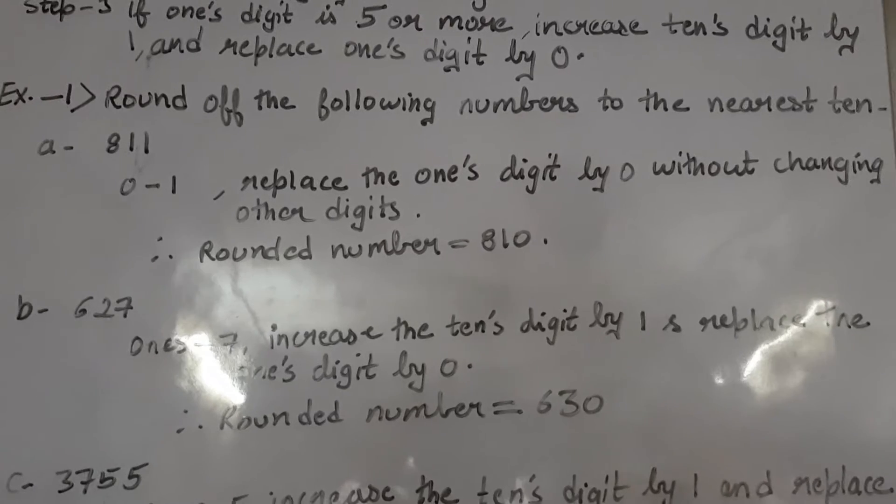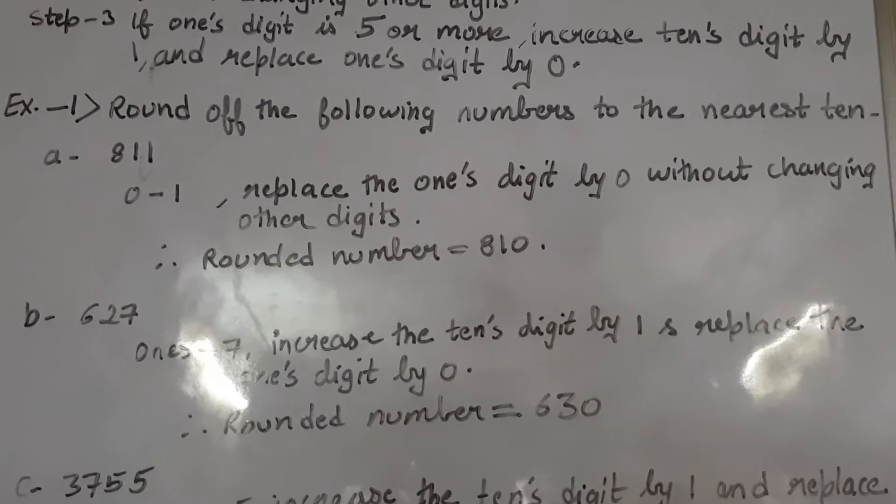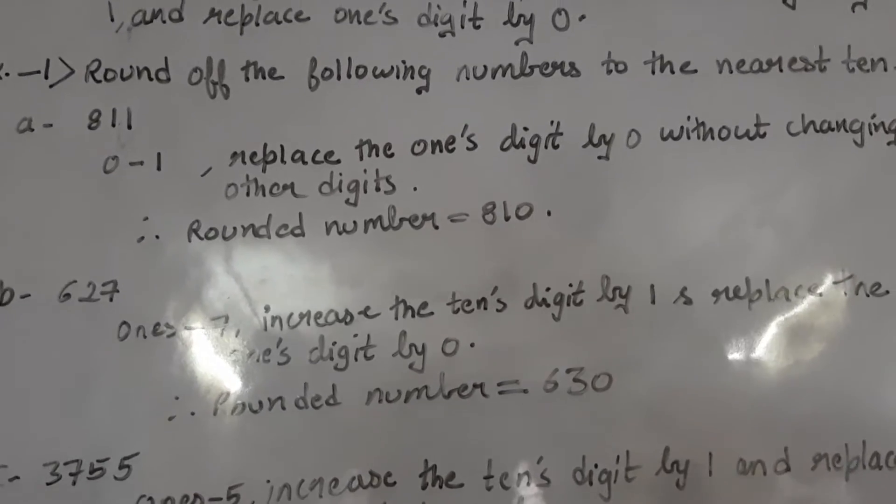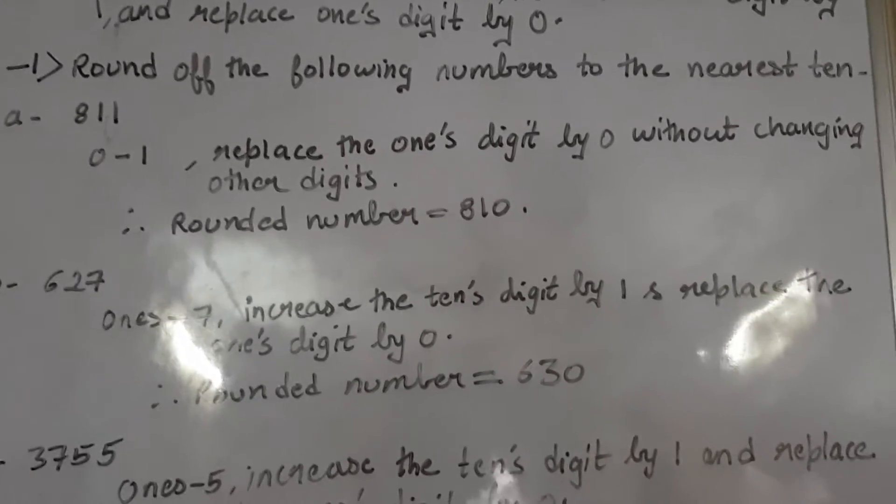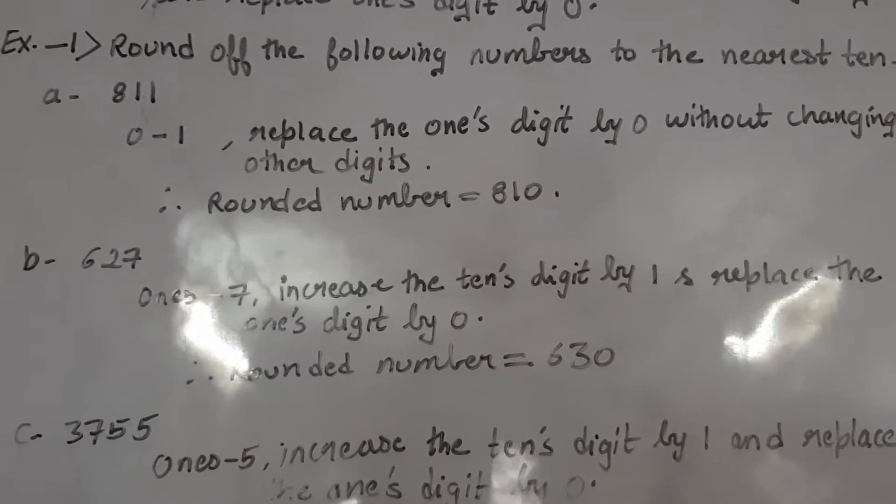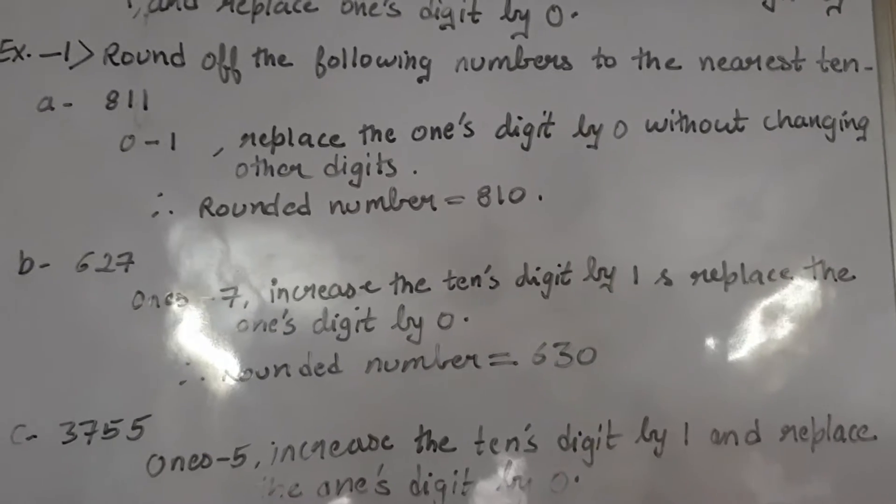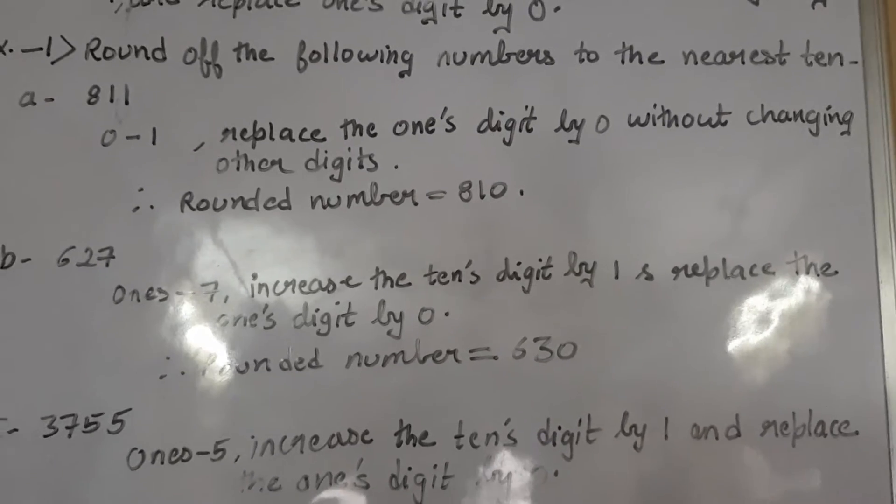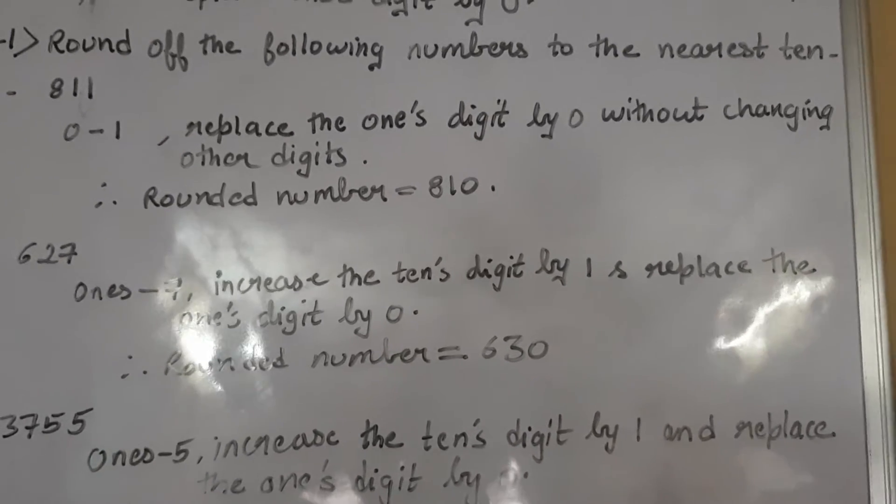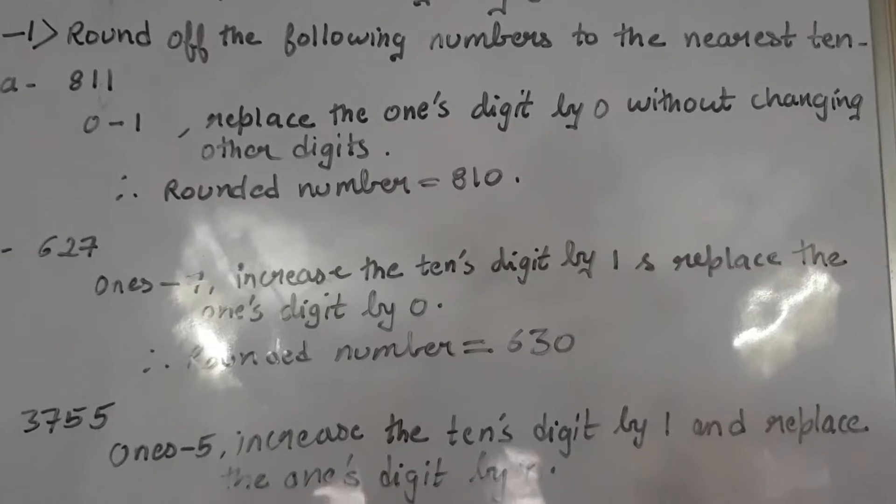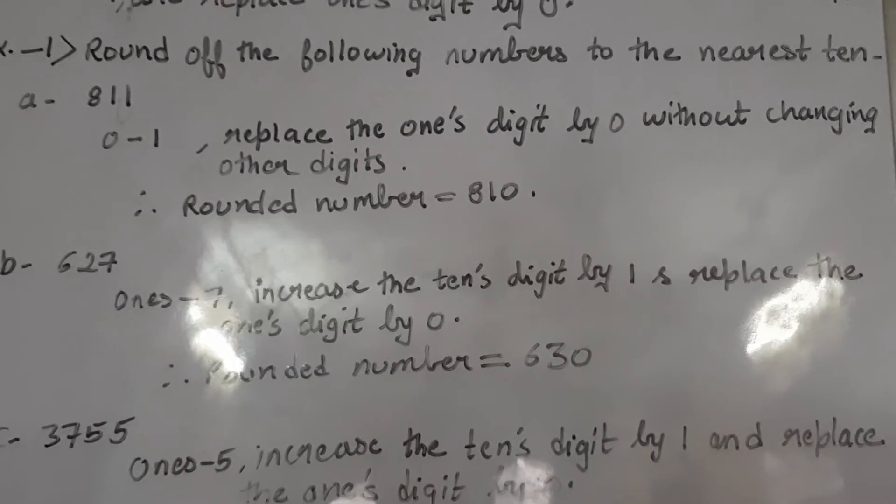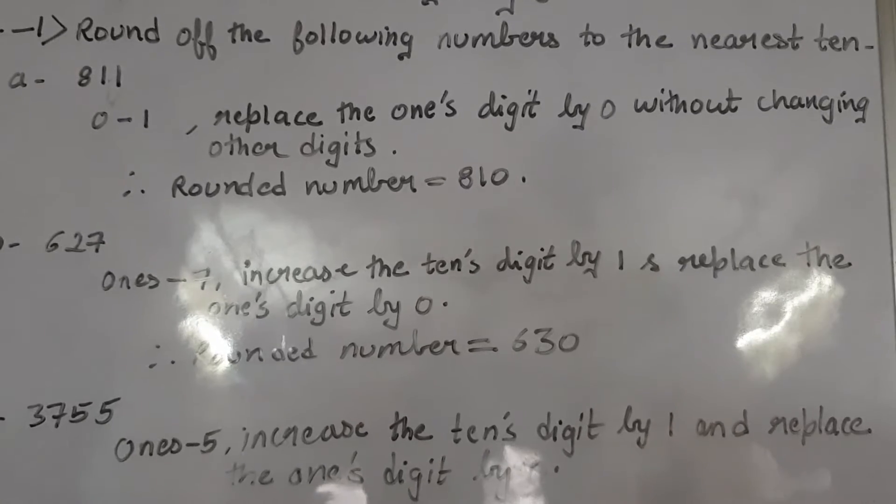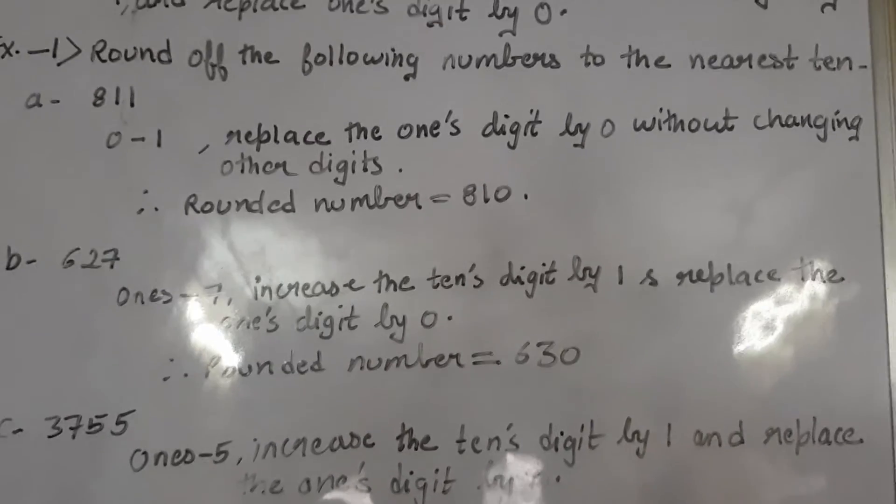So example 1 says: round off the following numbers to the nearest 10. So it means you have to round all the three numbers, all the three examples to the nearest 10. And first number is 811. And as I said earlier, always check the 1's place. So what is the 1's place? 1's place the number is 1. And as per the rule, if the digit at 1's place is less than 5, then replace it with 0 without touching other digits.